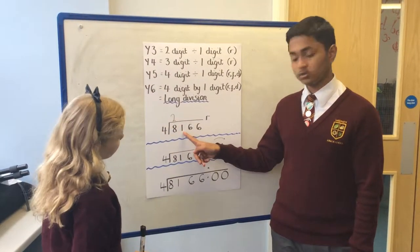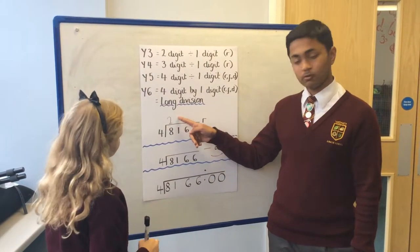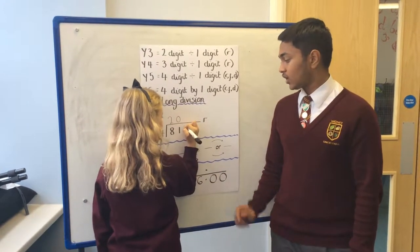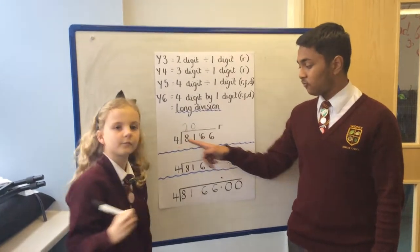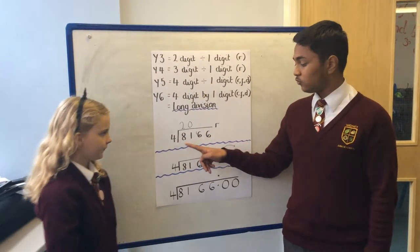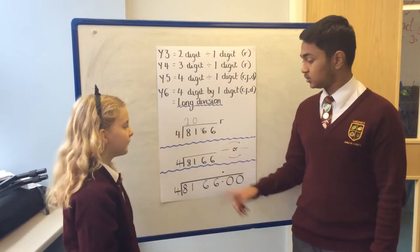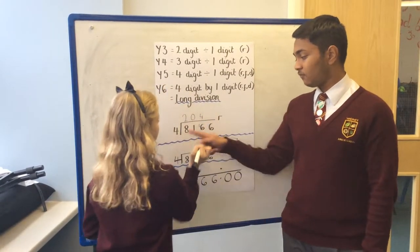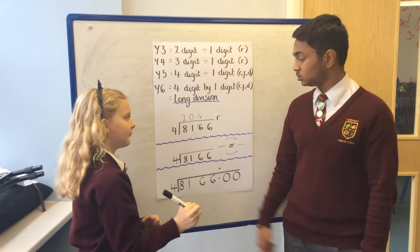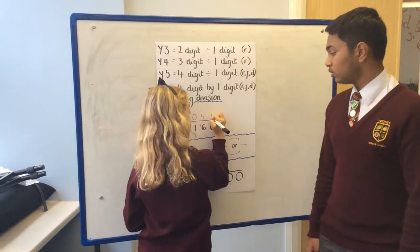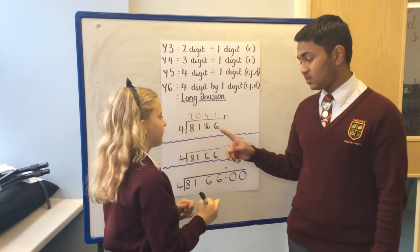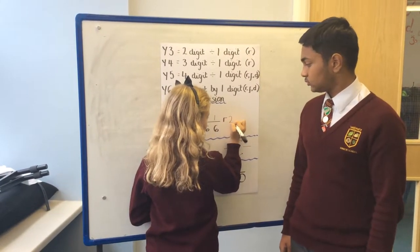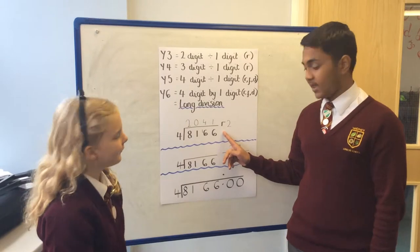4 into 1, so it is zero times, you put a placeholder. We carry the 1 and put it next to the 6 to make 4 into 16. 4 into 16 goes four times, so we put a 4 over the 6. And then 4 into 6 goes once, so we put a 1 over the 6, and then we have a remainder of 2, so we put 2 next to the R. This is how we show it with the remainder.